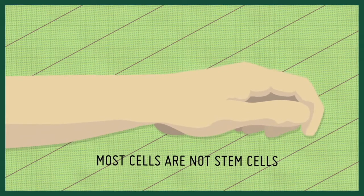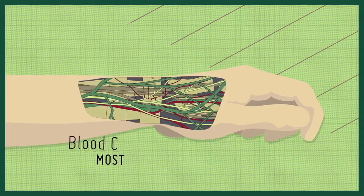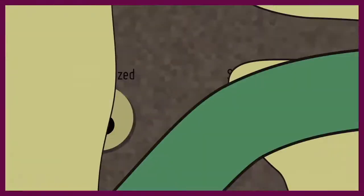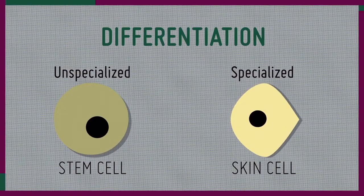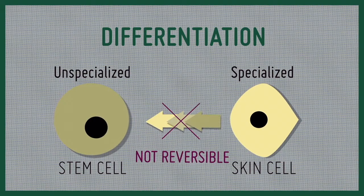Most of the cells in our bodies are not stem cells. For example, blood and skin cells have become specialized to perform a specific function in the body by a process known as differentiation. That's normally not reversible.